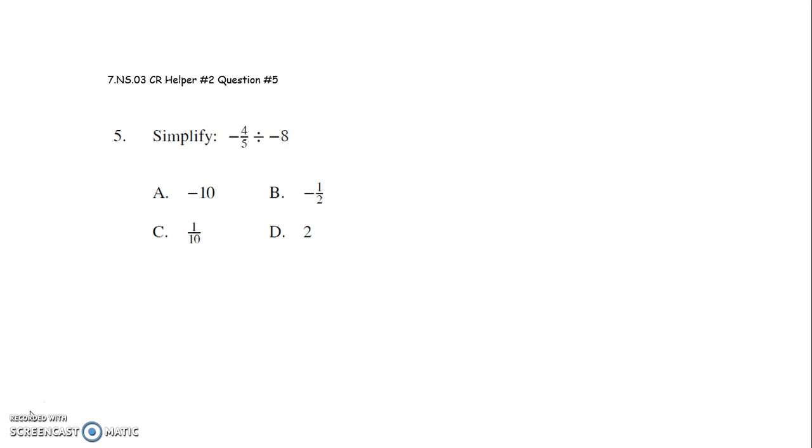So let me talk to you about what the standard algorithm means. The standard algorithm, we just take negative 4 fifths and divide it by negative 8. Negative 8 is the same as negative 8 over 1. So you want to write, if you have whole numbers, rewrite that whole number as a fraction.